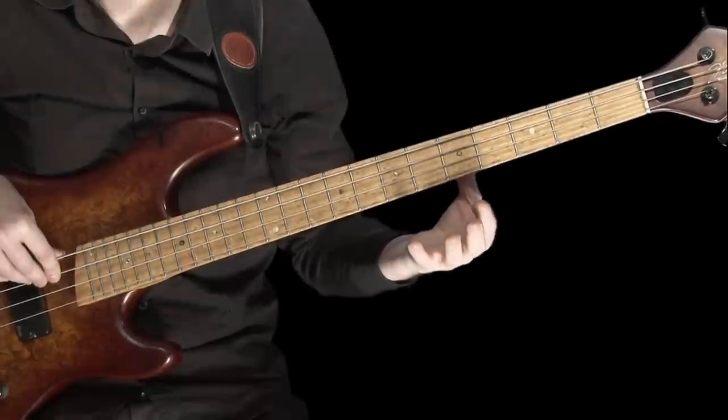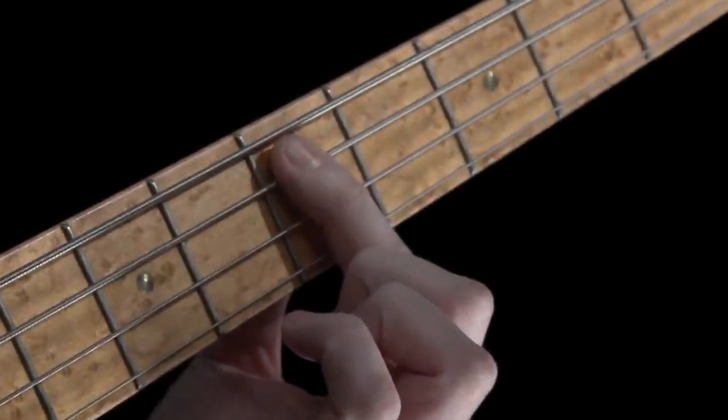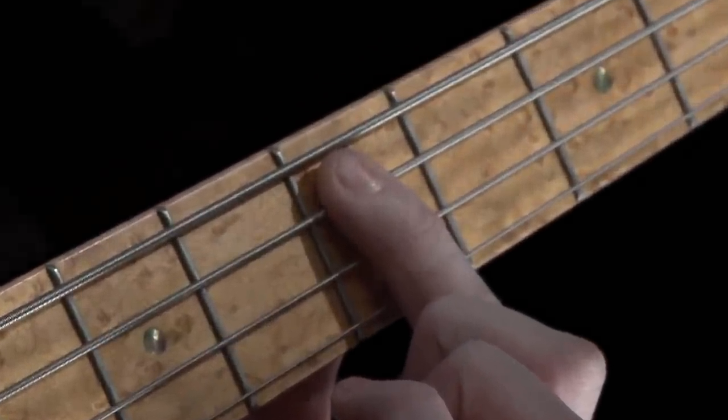So, here's an exercise that really looks into how we fret notes and teaches you that being efficient is always best. I'd like you to put your index finger on fret 5 of the A string and fret this note right in the center like this.